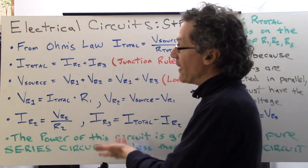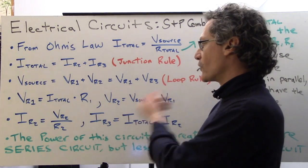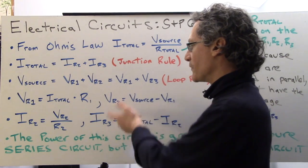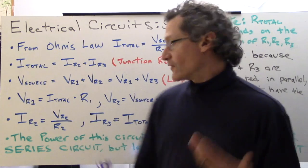I could have also found, if I wanted to, IR3 knowing V R3 as well. I can solve for V R3 knowing that it's the same as V R2. So in many ways to solve here, this is just one path to getting the solution.